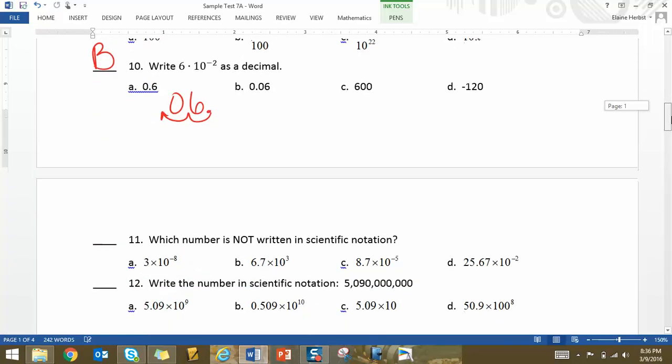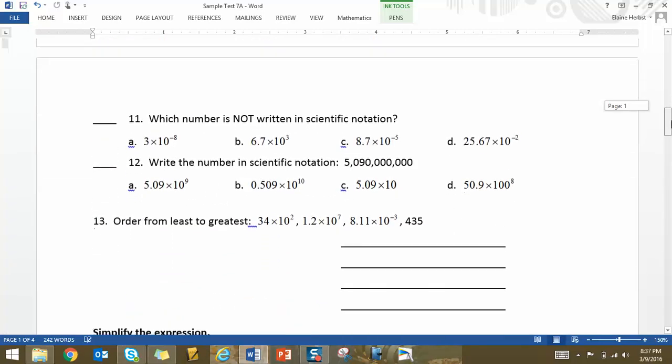Go on to the second page. Not written in scientific notation, and really it should say proper scientific notation, and that's letter D because this number is too big. Write the following number in scientific notation, and again it should be proper scientific notation, but it's letter A.